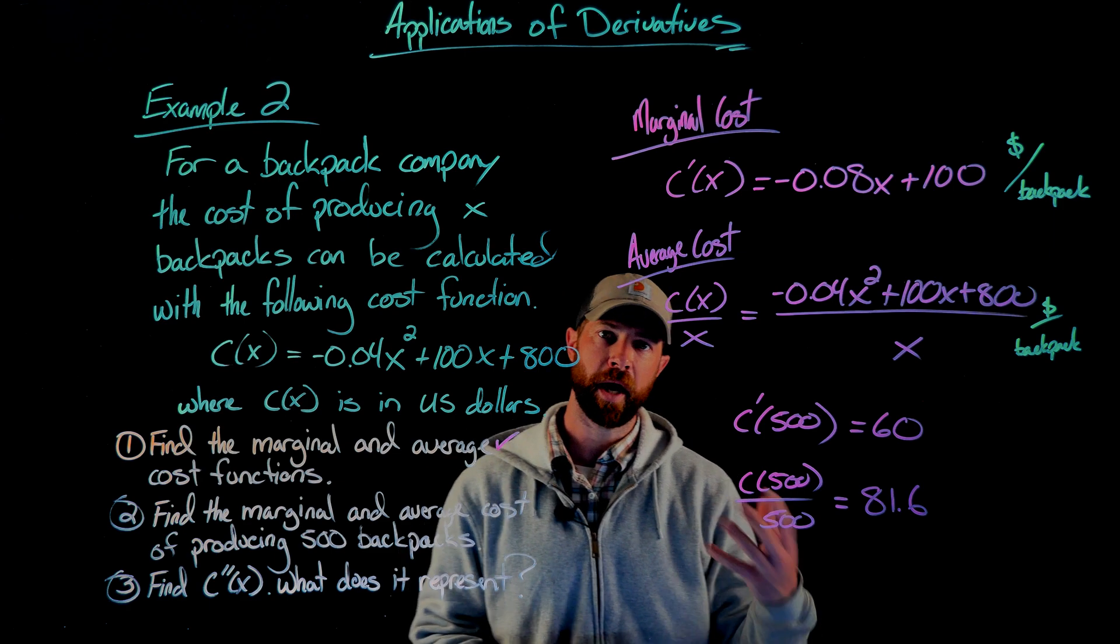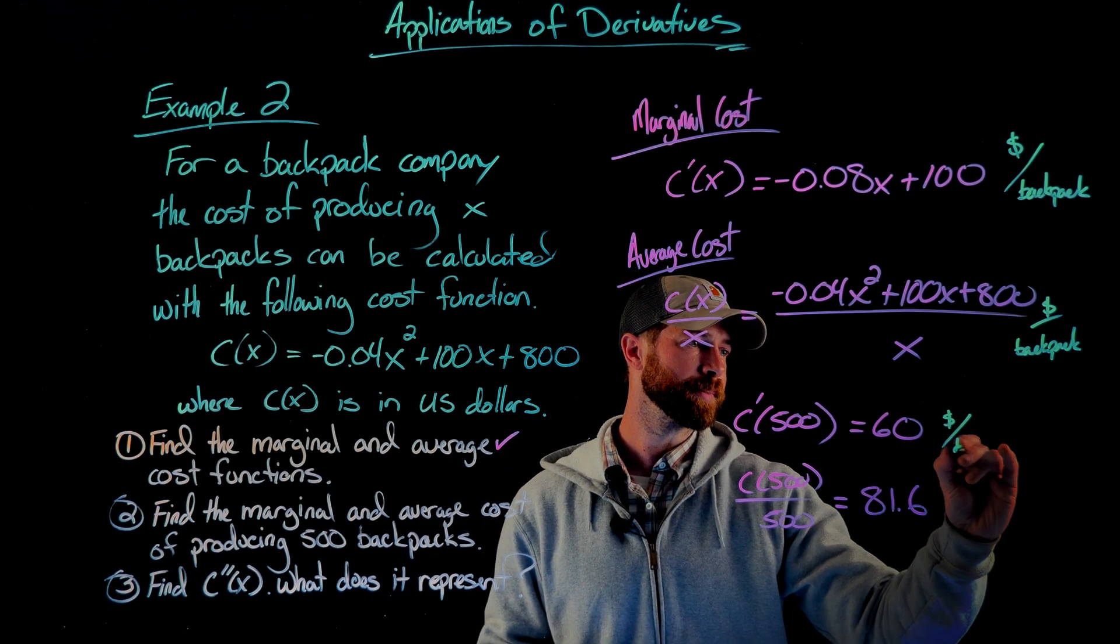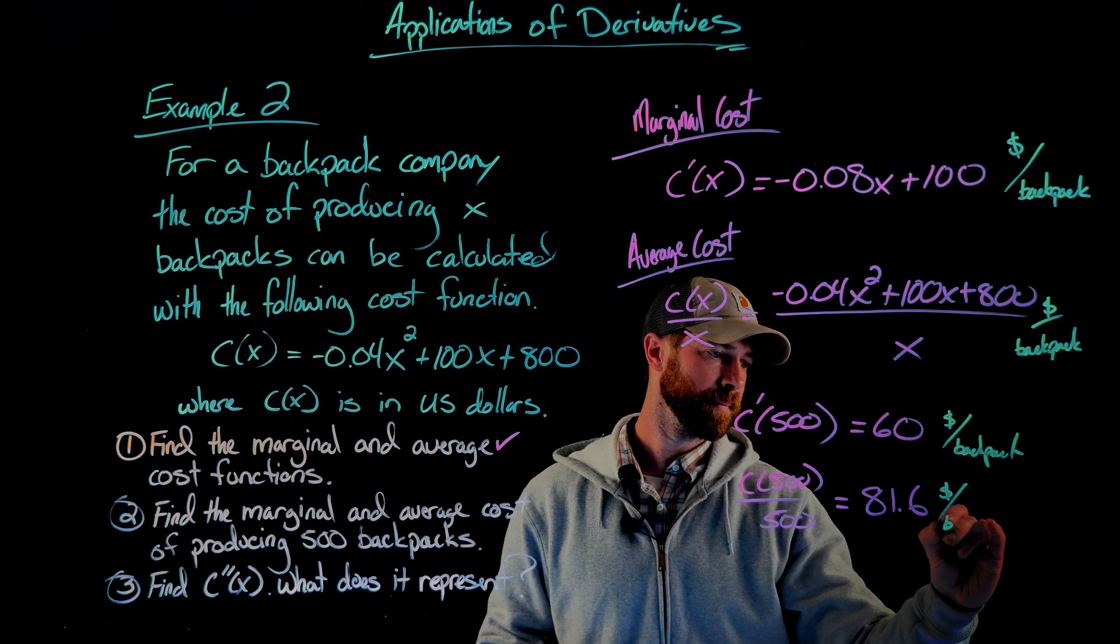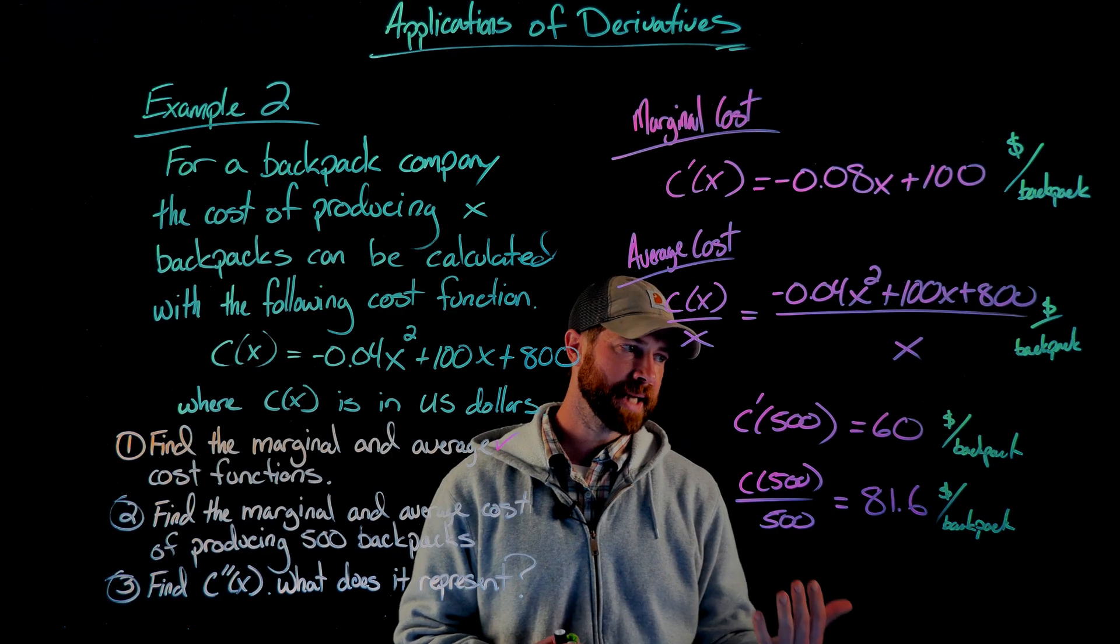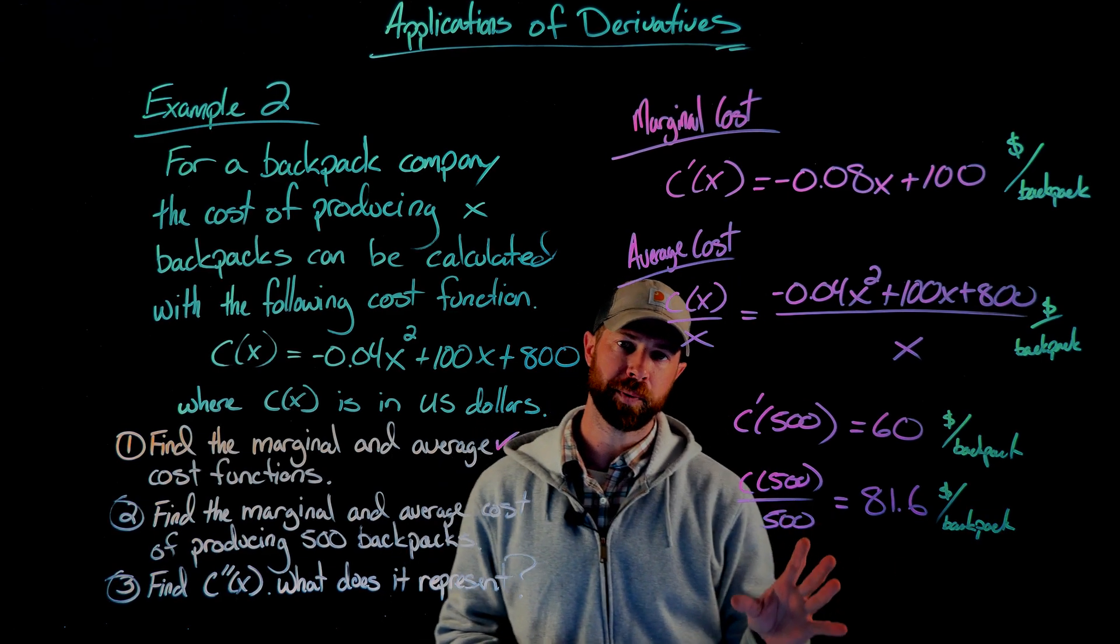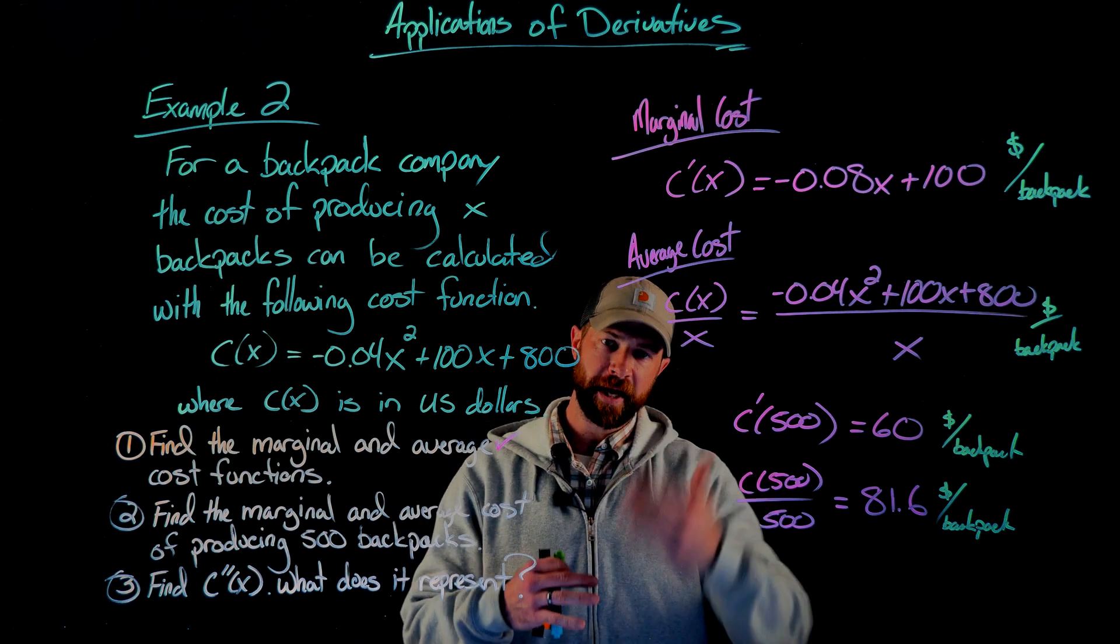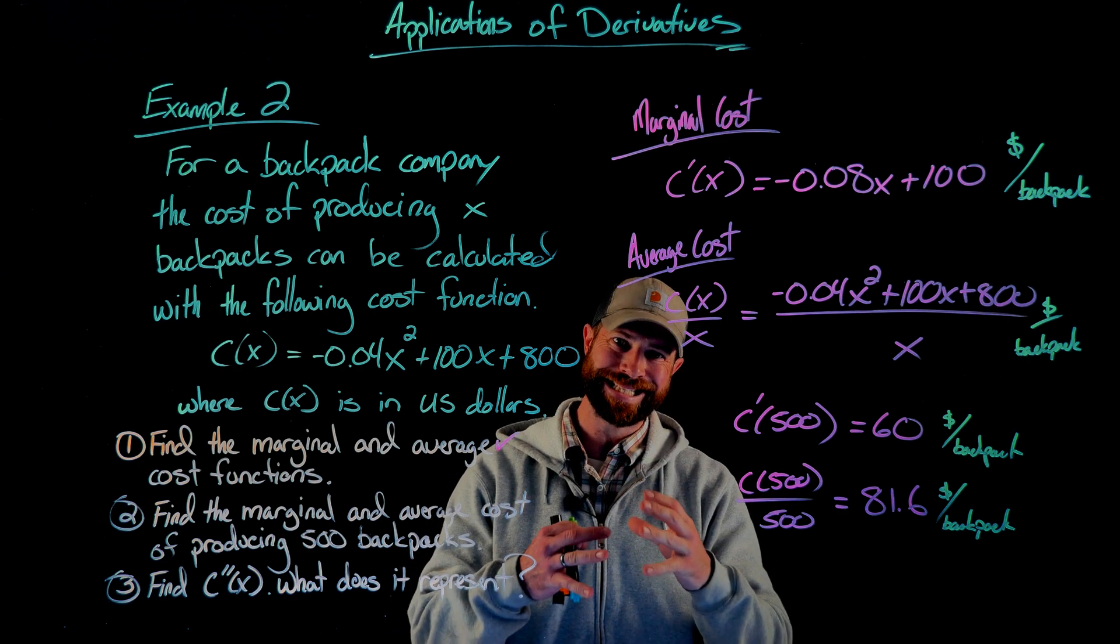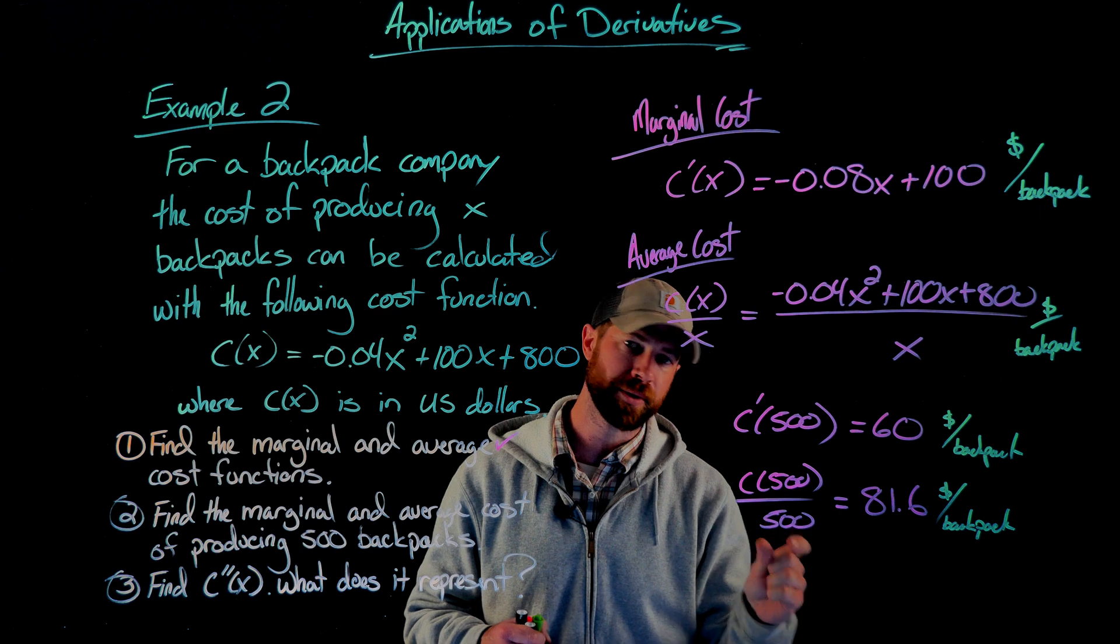Now importantly, we need to understand what this means. In this case, these are both dollars per backpack. As I said in the beginning, this is the difference between these two statements. This first statement says that at 500 backpacks, the cost per backpack to make, the exact instantaneous cost at that point, is costing this company $60 to produce that backpack.